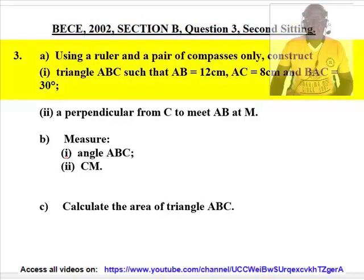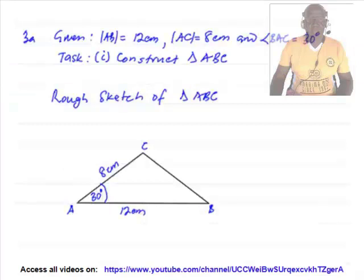3A: Using a ruler and a pair of compasses only, construct triangle ABC such that AB equals 12 cm, AC equals 8 cm, and angle BAC equals 30 degrees. I will pause for the solution to 3A sub-question I. We are to construct triangle ABC, with AB equal to 12 cm, AC equal to 8 cm, and angle BAC equal to 30 degrees. We shall do a rough sketch of the triangle.